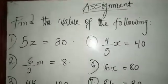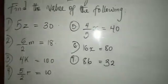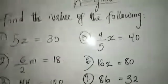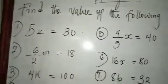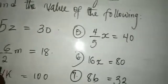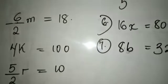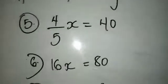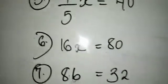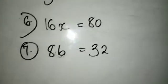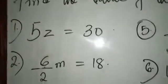What is in our assignment board? Find the value of the following: 5z equal to 30. Number 2, 2n is equal to 18. Number 3, 4k equal to 100. Number 5, 5 divided by 2r equal to 10. Number 4, 4 over 5x equal to 40. Number 6, 16x equal to 80. Number 7, 8b equal to 32.